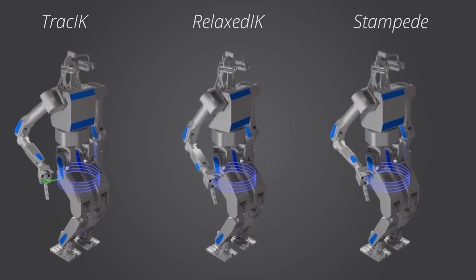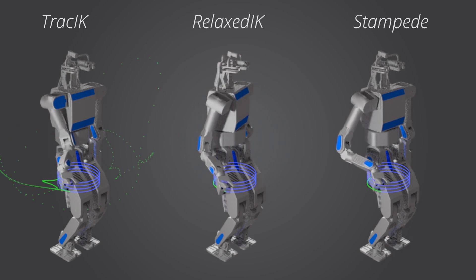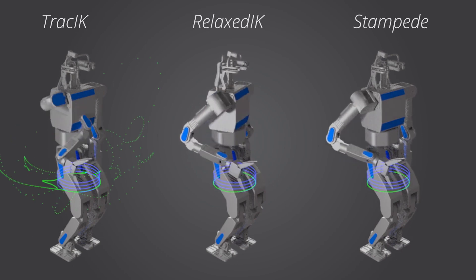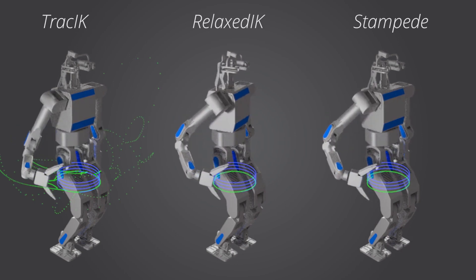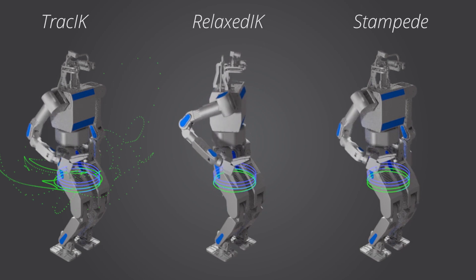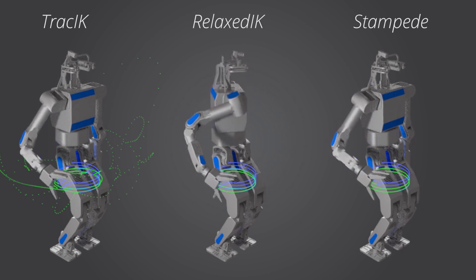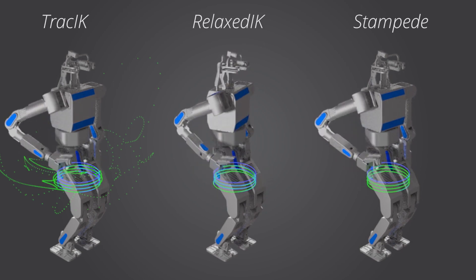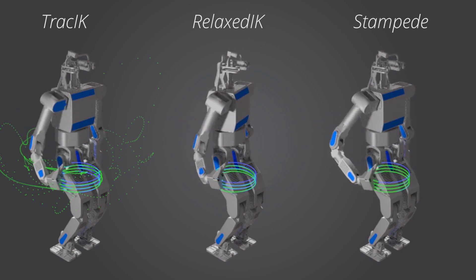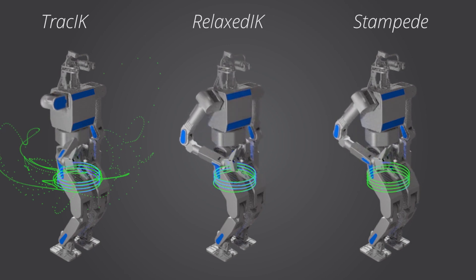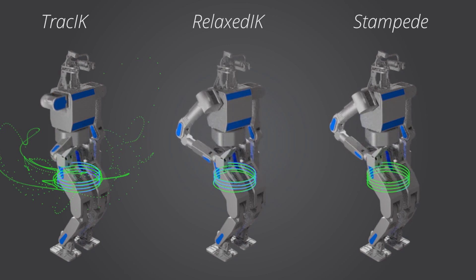Using a global optimization method featuring both non-linear and discrete optimization techniques, our method not only guarantees smooth and feasible robot arm motions, but the motions also match a given Cartesian path with very high accuracy.